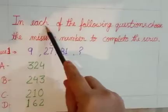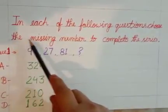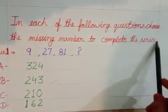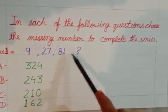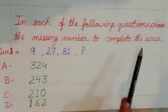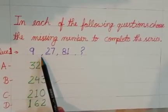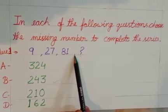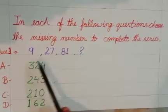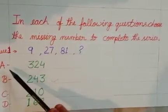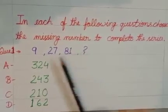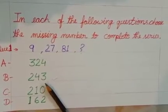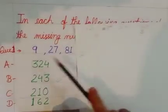In each of the following questions, choose the missing number to complete the series. Question number 1: 9, 27, 81, next. I repeat again, question number 1: 9, 27, 81, next. Now we have this series in which there are options A, B, C, D. Which number will complete the series? So this question we have to solve. What did you do in front of the 9?